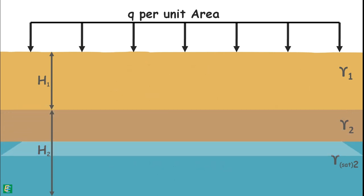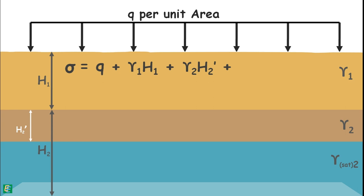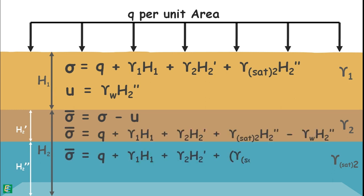Now let us calculate the effective stress on the plane at the bottom of the bottom soil deposit. Total stress at this plane is surcharge stress q plus stress because of the unsaturated soil layer gamma1 h1 plus stress because of the unsaturated part of the lower soil layer gamma2 h2 prime plus stress due to the saturated soil of thickness h2 double prime, gamma sat 2 h2 double prime. Pore water pressure at this plane is because of the water present above it, gamma water h2 double prime. Hence effective stress is total stress minus pore water pressure, and we can write this quantity using submerged unit weight of soil.